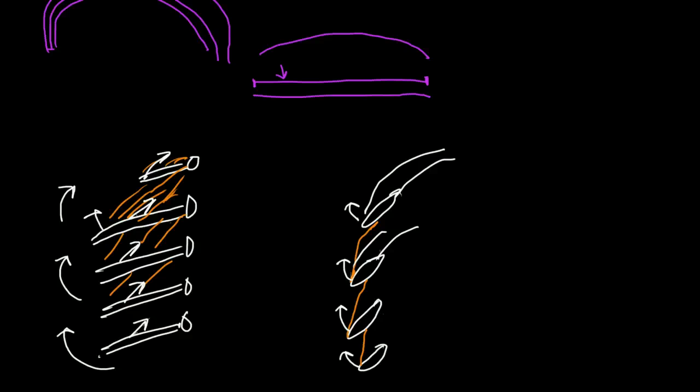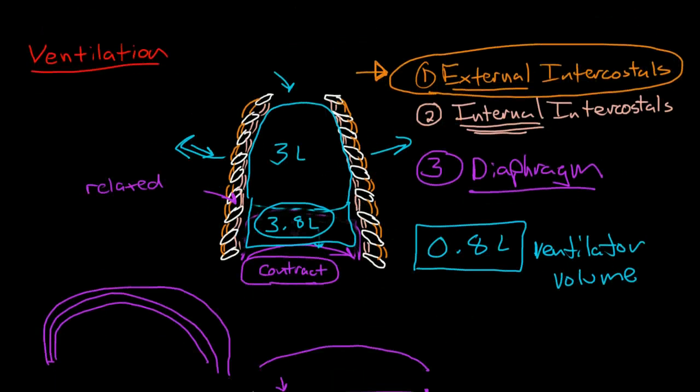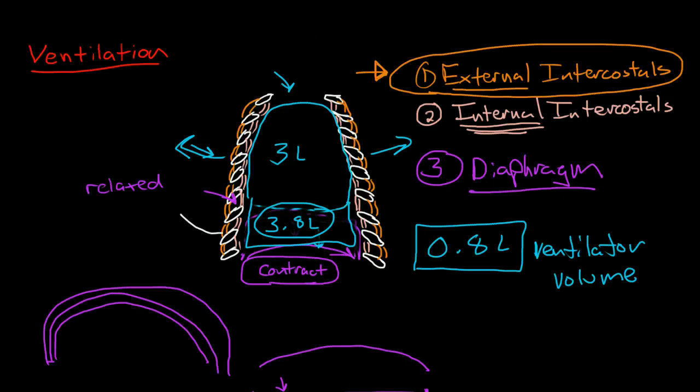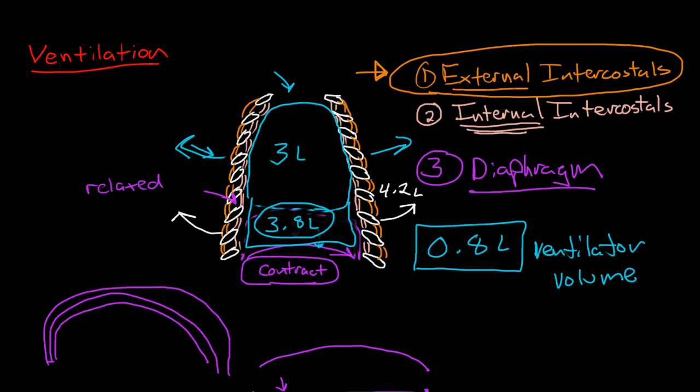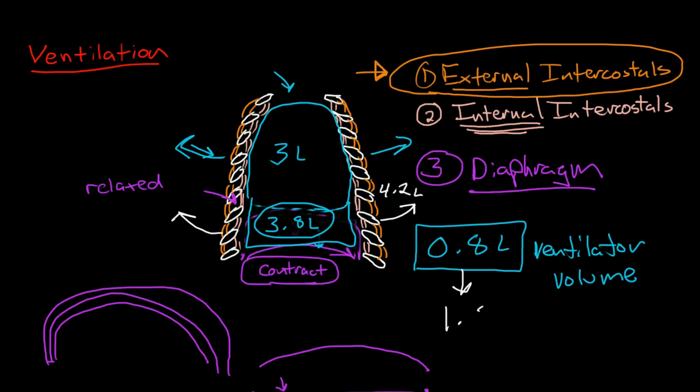The ribs are actually rotating. Both of these things, the ribs swinging on the hinges of the vertebrae and rotating on themselves, cause the chest wall to expand outwards when the external intercostals contract. So the external intercostals contract, cause the chest wall to expand outwards, and you increase this from 3.8 to maybe 4.2 liters. Then we've increased the ventilatory volume to 1.2 liters.